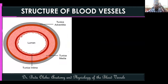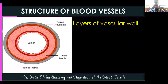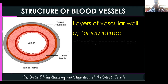Each blood vessel has three histological layers. Let's focus on arteries. The innermost layer is called the tunica intima, which is lined by endothelial cells.